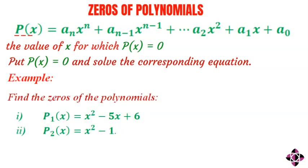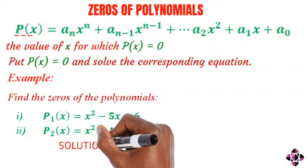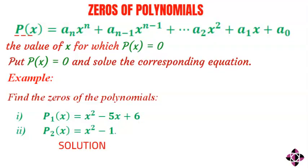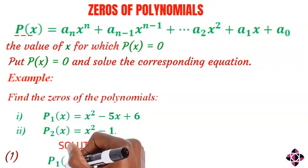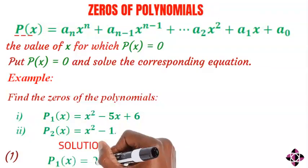Example: find the zeros of the polynomials — p of x equals x squared minus 5x plus 6, and p of x equals x squared minus 1. Solution: you have to equate the above equation to zero, that is, p of x equals zero.